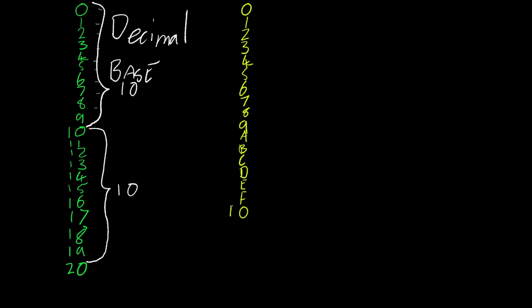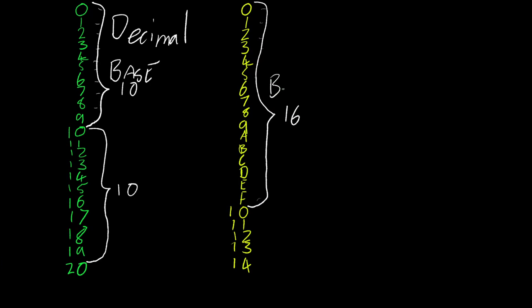So we start off with zero again and do the same thing like before. Now this numbering system, if we count them up between zero and where we had to repeat, there are sixteen values. So this is a base sixteen numbering system, and it's called hexadecimal — just another numbering system that works with a different base than what we're used to.